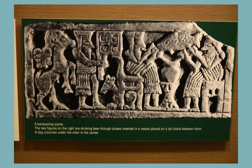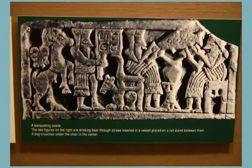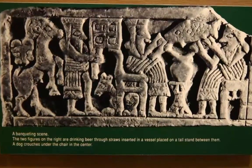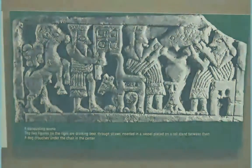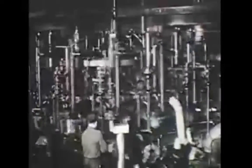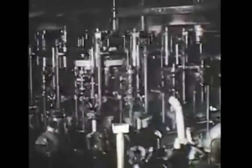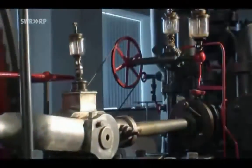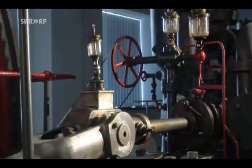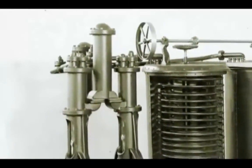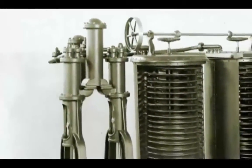Beyond its contributions to science, there is evidence to suggest that beer was the driving force behind the agricultural revolution, which ultimately gave rise to organized civilization. Now if you think that the first automated assembly line was in the factories of Henry Ford, you'd actually be wrong. In fact, Michael Owens's beer bottle machine was the first machine to be used in large-scale assembly line production. Some of the first studies into refrigeration were funded by the beer industry in order to allow for year-round production of lagers, which require colder brewing temperatures in order to control fermentation.